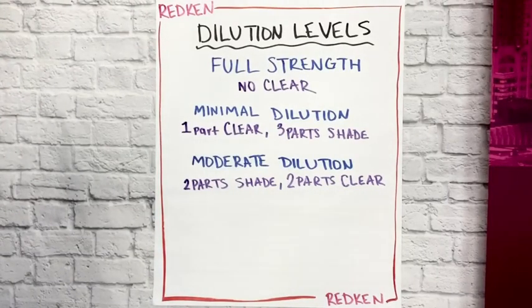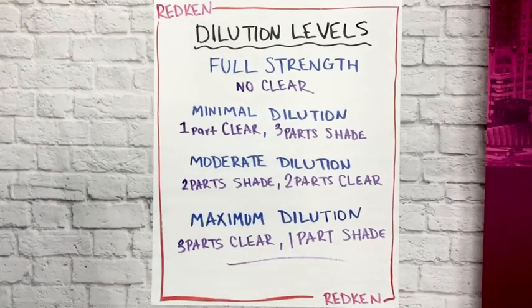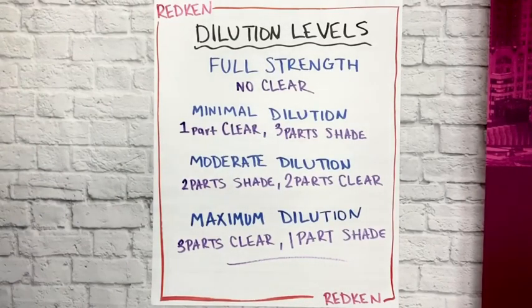Then we have Moderate Dilution, which is two parts shade and two parts clear, or equal parts shade and clear. Then we have my personal favorite, which is Maximum Dilution, which is three parts clear and one part shade.